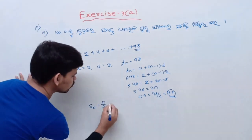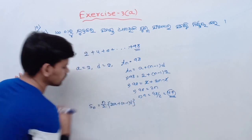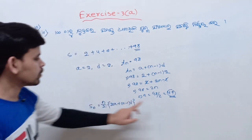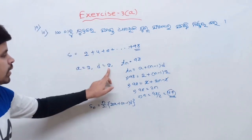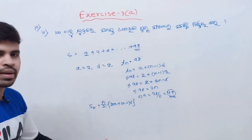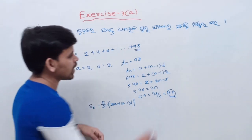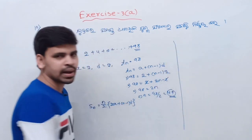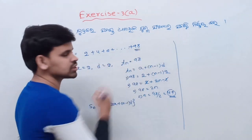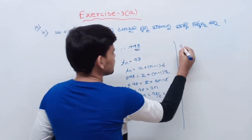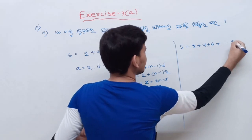So N by 2 into 2A plus N minus 1 into D. If you want to add N with A equals 2 and D equals 2, then you can find the sum S. This is the process. We can do this trick in the short trick. If you want to add 2 plus 4 plus 6 up to 98, then S equals 2 plus 4 plus 6 up to 98.